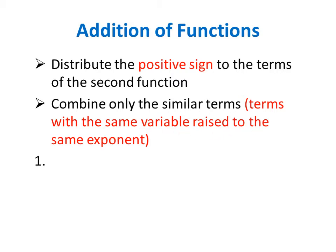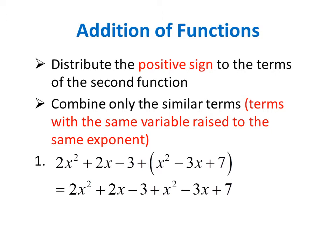Let's consider some examples. Let's say we have to add 2x squared plus 2x minus 3 and the function x squared minus 3x plus 7. So first we have to distribute this positive sign to each term in the second function. Let's copy the first three terms: 2x squared plus 2x minus 3. Then if we distribute or multiply each term of the second function by the positive sign,